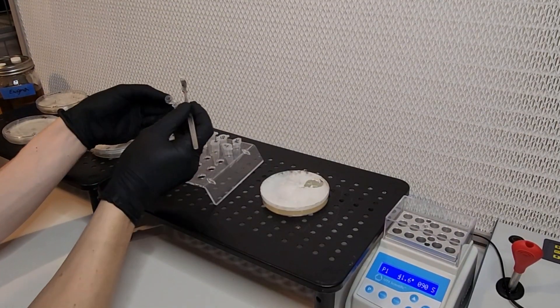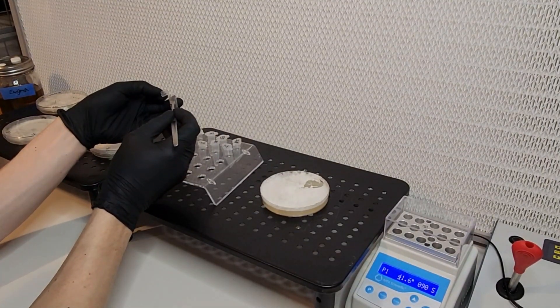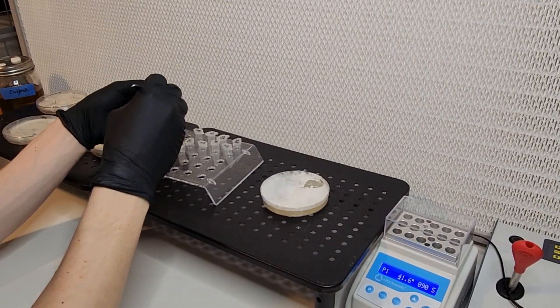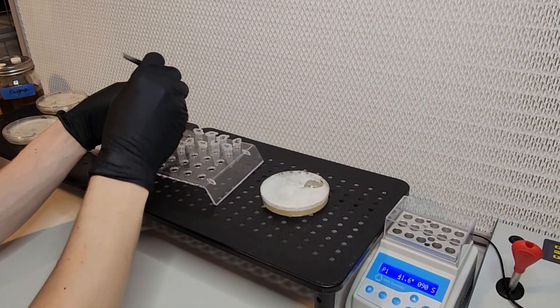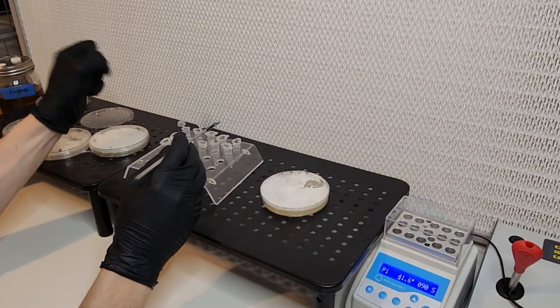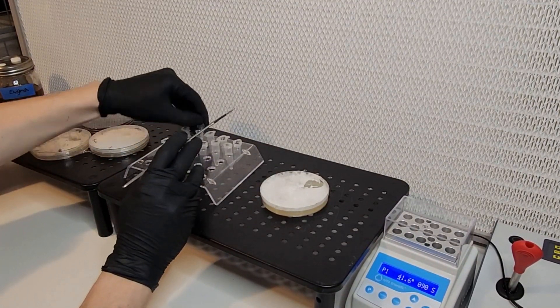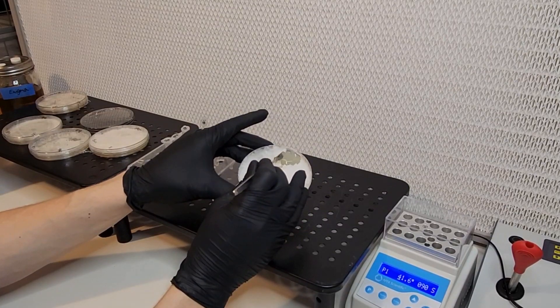Here you can see that I'm trying to get the mycelium into these little 1.5 milliliter microcentrifuge tubes without touching the outside of the tube. I want the blade of the scalpel to only touch the inside of each tube. That way it stays clean.